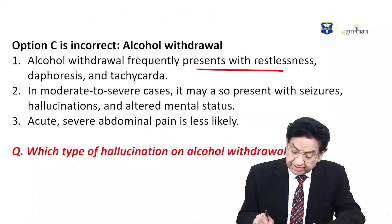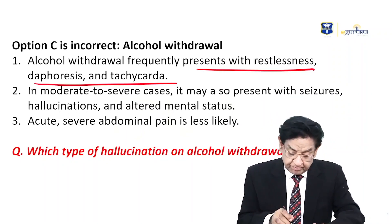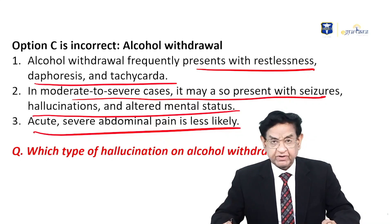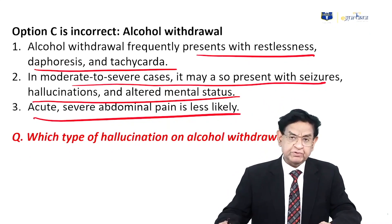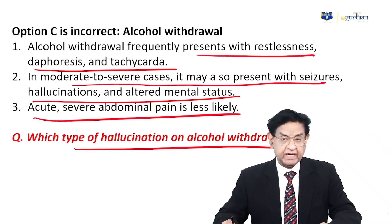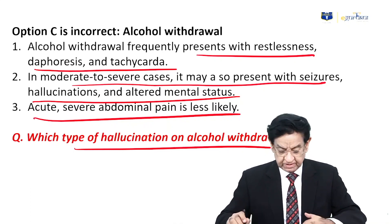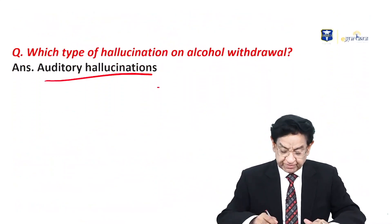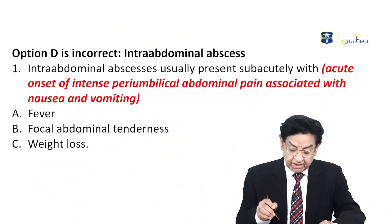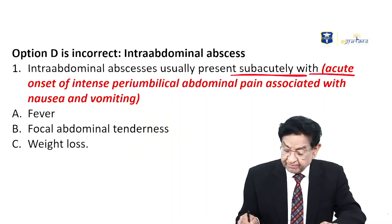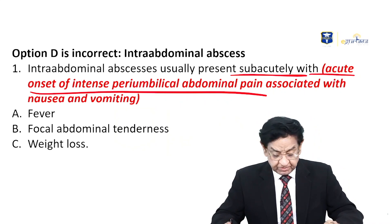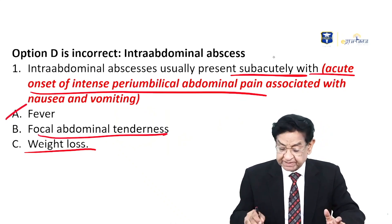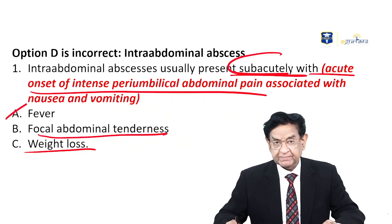Alcohol withdrawal frequently leads to restlessness, diaphoresis, and tachycardia. In moderate to severe cases, seizures, hallucinations, or altered mentation can happen — the hallucination in alcohol withdrawal is auditory hallucination, a very important point. Acute abdominal pain is not a feature of alcohol withdrawal. Intra-abdominal abscess usually presents sub-acutely with fever, focal tenderness, and weight loss — not the acute-onset peri-umbilical pain seen in our patient.